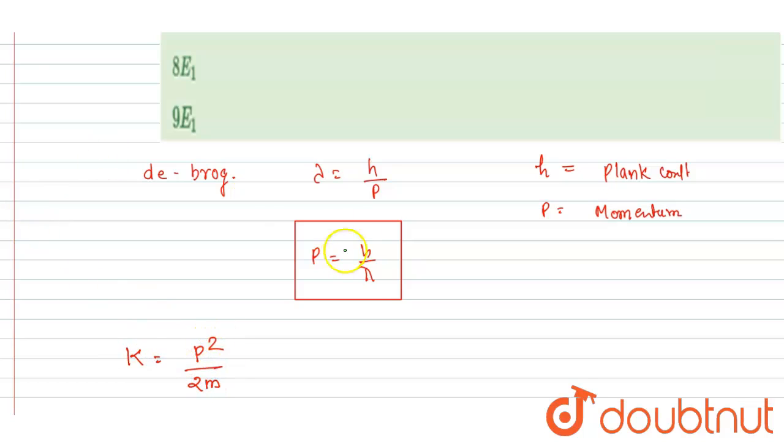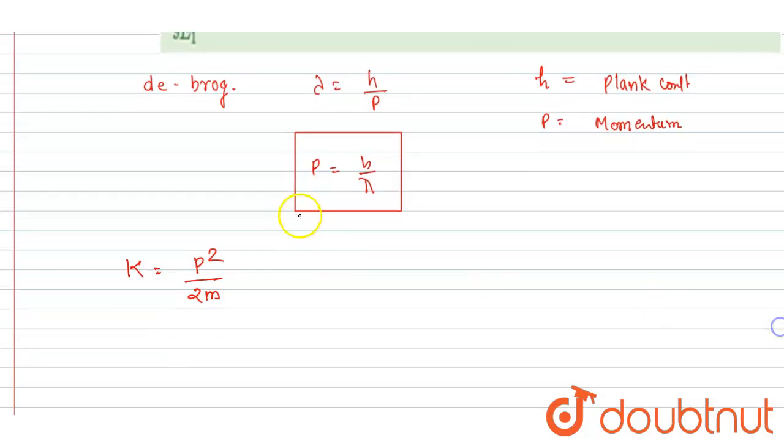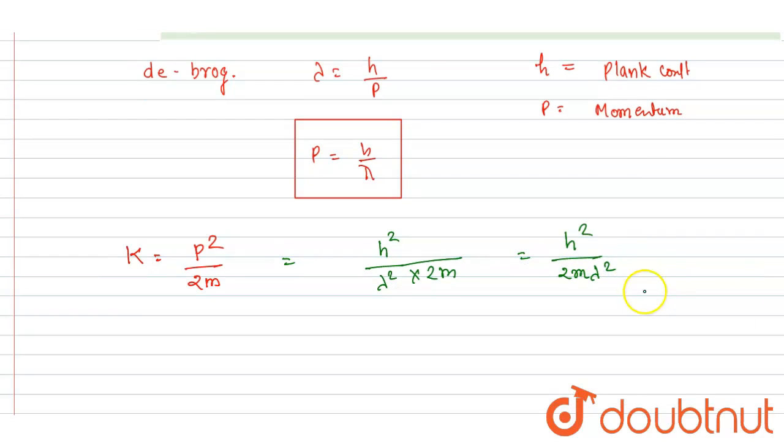So you can put the value of momentum, it is h by λ, so I will write h squared by λ squared into 2m is the kinetic energy. It is h squared over 2m lambda squared.